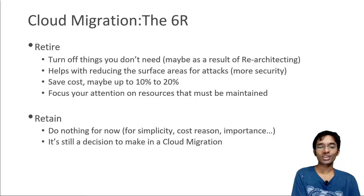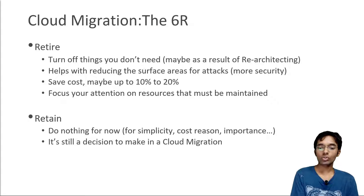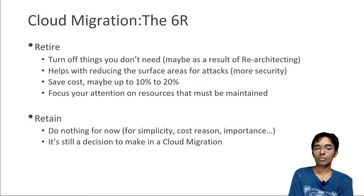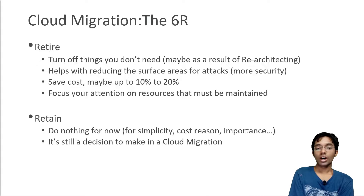Finally, Retain means deciding to do nothing for now in cloud migration — because it's too complicated to migrate, you have large monolithic applications, or there are cost concerns. Retaining something on-premise is a decision in itself. A cloud migration is not all-or-nothing; it can be a mix of retire, retain, re-architect, rehost, and re-platform. For the exam, understand that based on the scenario AWS gives you, you need to identify the right cloud migration strategy. Remember to read the blog, and I'll see you in the next one.